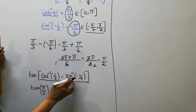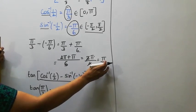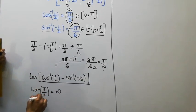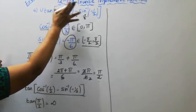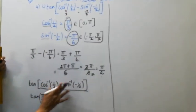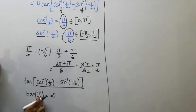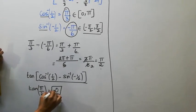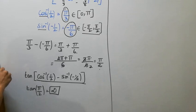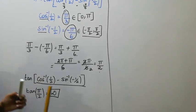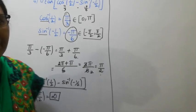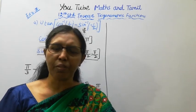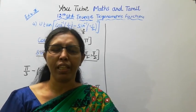Therefore, cos inverse of half minus sin inverse of minus 1/2 equals π/2. Practice with this channel to help you get 100 marks. Subscribe, and see you in the next video. See you soon.